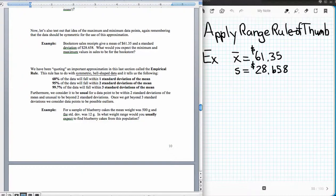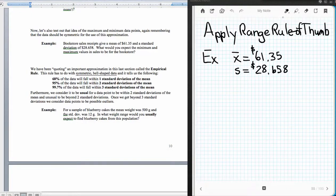A bookstore sales receipts gives a mean of 61.35 and a standard deviation of 28.658. What would you expect the minimum and the maximum values in sales to be for this bookstore? So what we're going to do is we're going to say, our minimum, we would expect to be two standard deviations below.